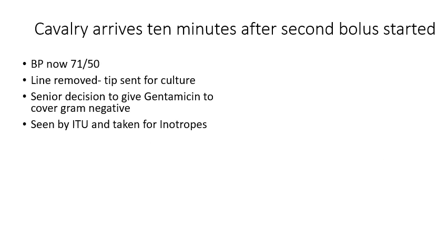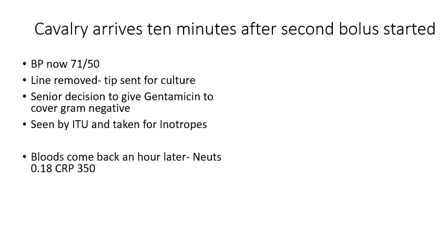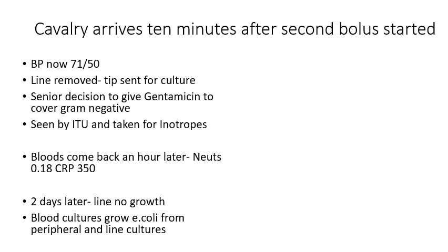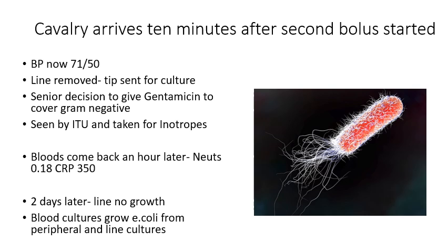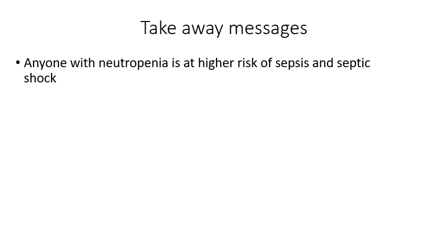The senior team arrives ten minutes after the second bolus is started. Blood pressure is dropping further, so a decision is made to remove the line and send the tip for culture — remembering to do that is really important. A senior decision is made to add gentamicin for gram-negative cover. The patient is seen by ITU and transferred there for a couple of days on inotropic support, before being discharged well. Bloods an hour later show neutrophils of 0.18 and CRP markedly elevated — confirming true neutropenic sepsis. Two days later, blood cultures from both peripheral and line samples grow E. coli, confirming bacteraemia from within the bloodstream.